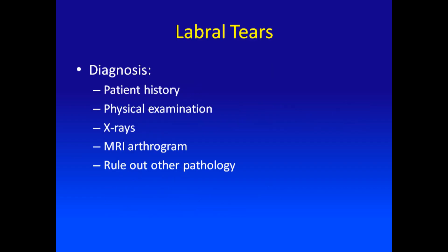Diagnosis of these tears begins by simply talking to the patient and performing a physical examination. X-rays are obtained to look for bone spurs or arthritis. An MRI arthrogram is a special test that is used to look specifically for the labral tear. And then finally, it's important to rule out any other sources of potential hip pain that may be coming from places other than the hip.